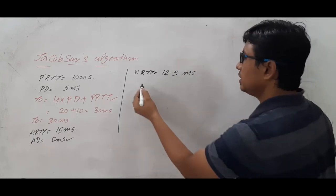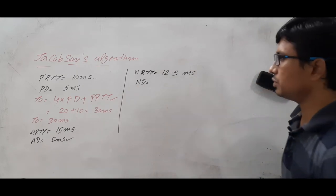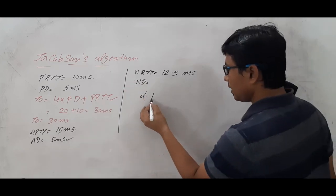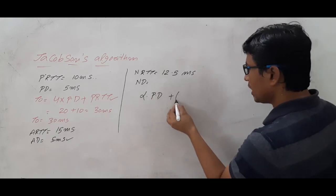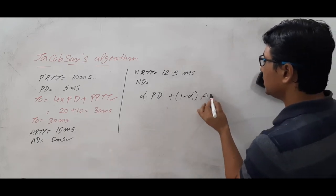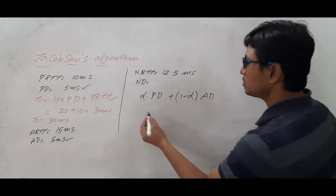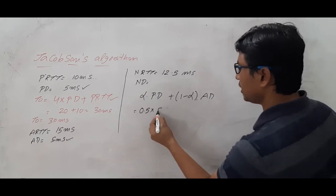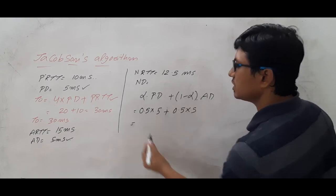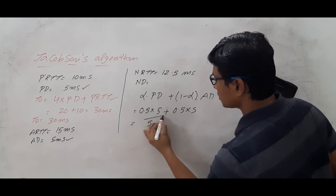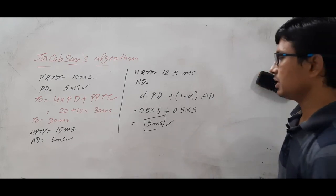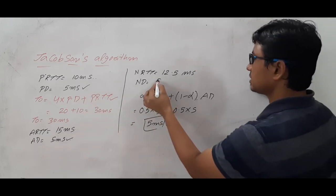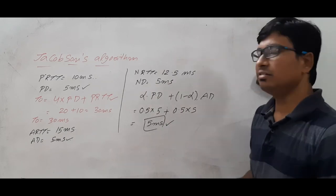Now again, you need to predict the deviation. The next deviation is computed using the formula: alpha into predicted deviation plus 1 minus alpha into actual deviation. With alpha equal to 0.5: 0.5 into 5 plus 0.5 into 5, which equals 5 milliseconds. So your next deviation is 5 milliseconds.